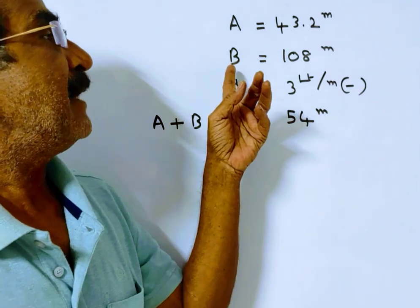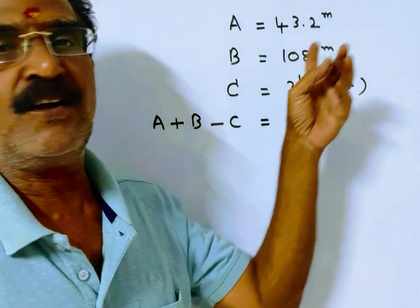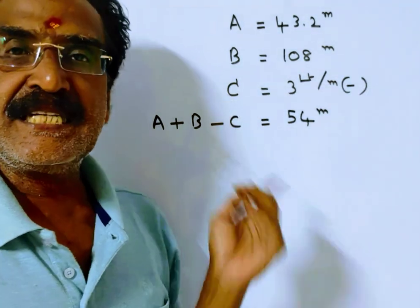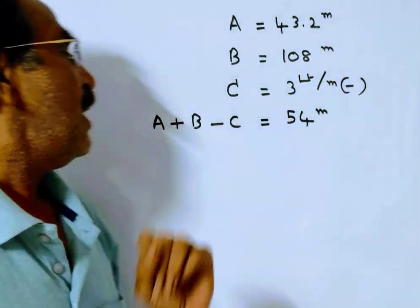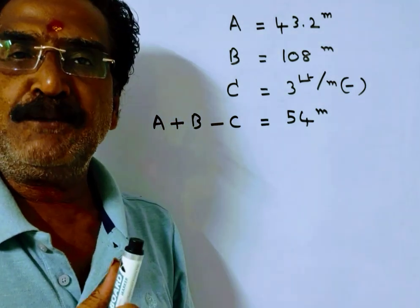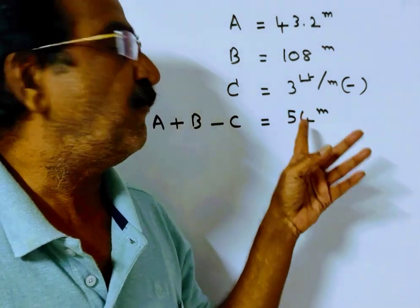Pipe A and B can fill a tank in 43.2 minutes and 108 minutes. Pipe C can empty 3 liters per minute, and all three pipes together can fill the tank in 54 minutes.